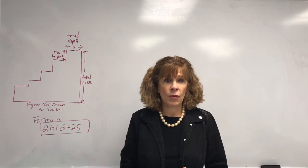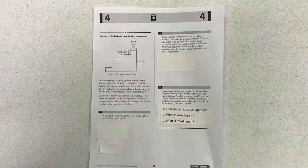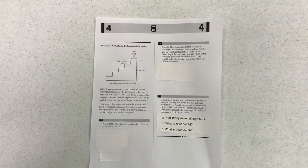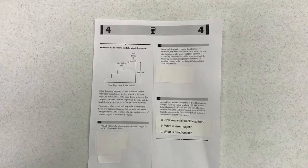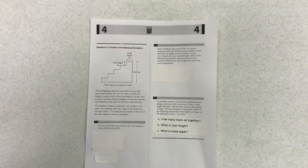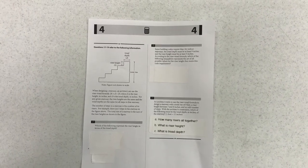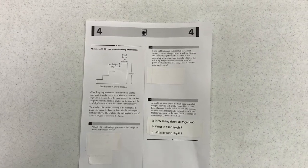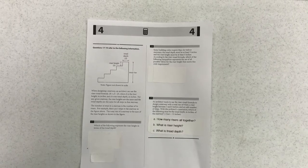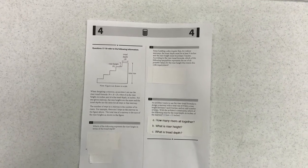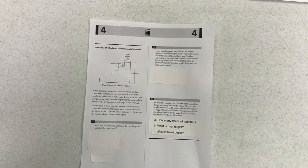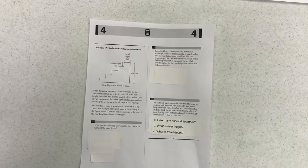Here is a copy of the test question. You can see that it says questions 17 to 19 refer to the following information. When designing a stairway, an architect can use the rise or tread formula 2H plus D equals 25, where H is the rise or height in inches and D is the tread depth in inches for any given stairway. The riser heights are the same and the tread depths are the same for all steps in that stairway. The number of steps in a stairway is the number of its risers. For example, there are five steps in the stairway in the figure above. The total rise of a stairway is the sum of the total heights as shown in the figure.